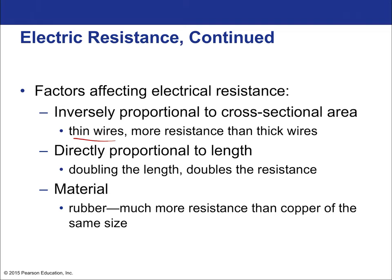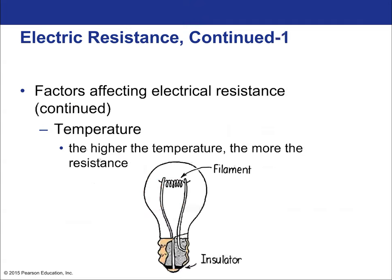Also, material matters: rubber has very high resistance — it is an insulator. Insulators have very high resistance; conductors can have quite low resistance. Temperature also matters: the higher the temperature, the more resistance. As the metal heats up, the nuclei left behind as electrons rush past start bouncing back and forth, getting in the path of electrons more frequently. This causes more collisions between the fixed nuclei and the moving electrons, and that energy is imparted to the vibration of the solid, with some lost as heat.